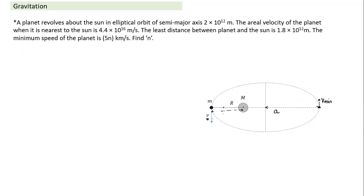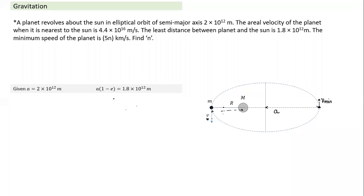To find the minimum velocity, if I get the distance from the nearest to the farthest point, since area velocity is known, I can find v_minimum. How do we find this distance? Very simple. The a value is given, and the nearest distance is given — that is a times (1 minus e). So from these two, I can find the value of e.